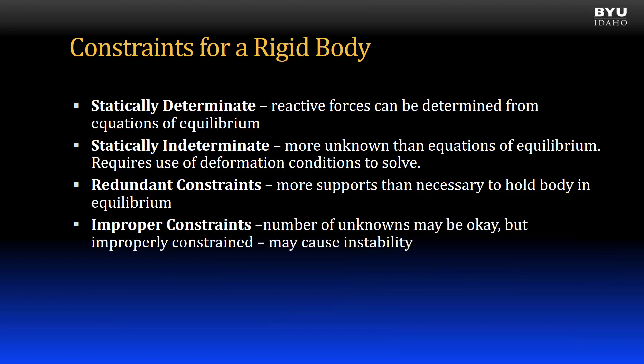Now let's discuss structures with improper constraints. A structure or body is said to be improperly constrained if it may become unstable under an applied load. Note that it is possible for the number of unknown reactions on a structure to equal the number of equilibrium equations and still be improperly constrained. Let's look at a couple of examples.